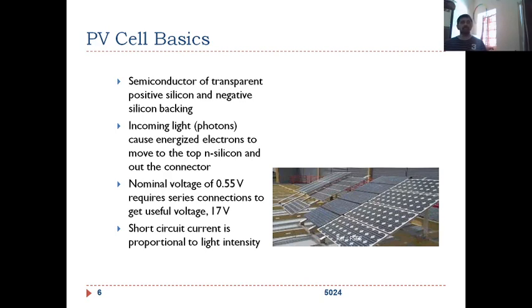The semiconductor of transparent positive silicon and negative silicon backing is simply a photovoltaic cell. The most commonly employed semiconductor to make a photovoltaic cell or PV cell is silicon. Incoming light, the photons, cause energized electrons from the n-type region to move to the p-type region. A nominal voltage of 0.55 volts is required; serious connections to get useful voltage of 17 volts.